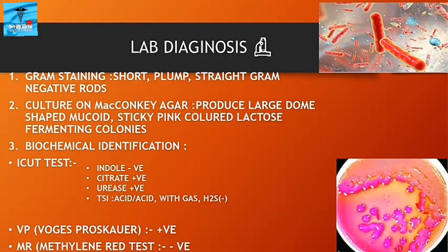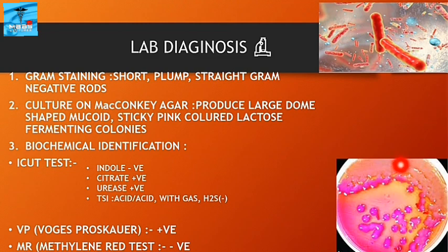Lab diagnosis: On Gram staining, we get short, plump, straight gram-negative rods. On MacConkey agar, it produces large, drum-shaped, mucoid, sticky, pink lactose-fermenting colonies.